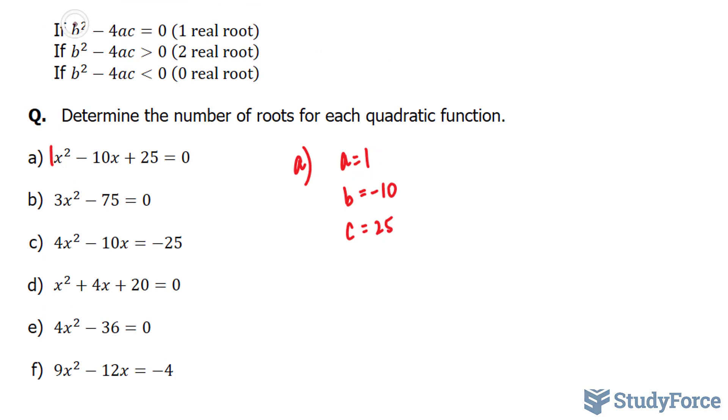Now what I'll do is plug in these values into this expression. b squared is negative 10 to the power of 2 minus 4 times 1 times 25. Negative 10 to the power of 2 is 100 minus 4 times 25, which is also 100. So it's like saying 100 minus 100, and that gives us 0.